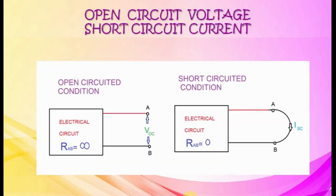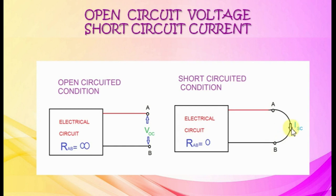Open circuit voltage and short circuit current. In an open circuit condition, output terminals are open; resistance at the terminals will be infinity. Voltage across open circuit terminals is called VOC. In a short circuit condition, output terminals are closed; resistance at the terminals will be zero. Current through short circuit terminals is called ISC.